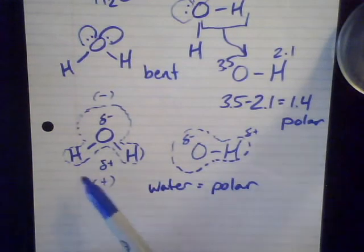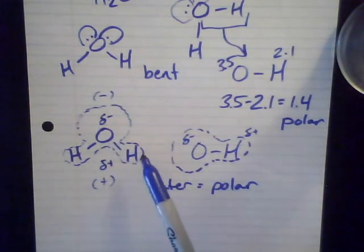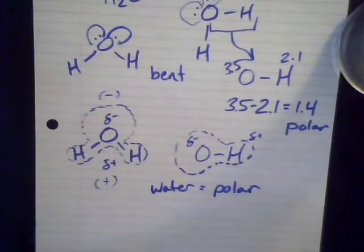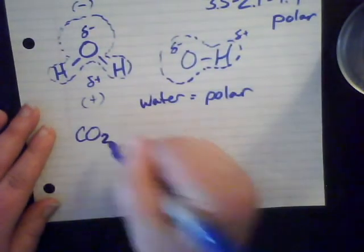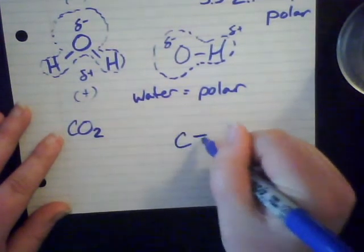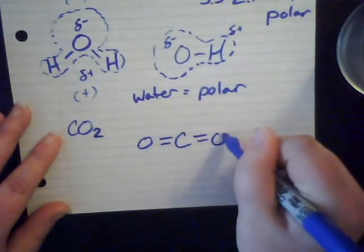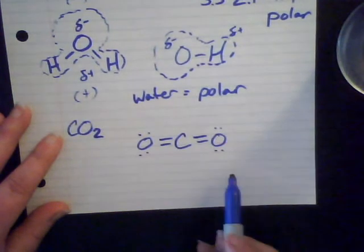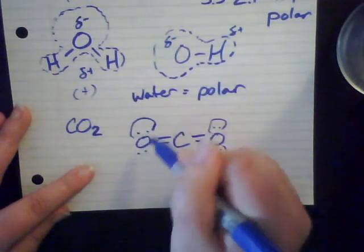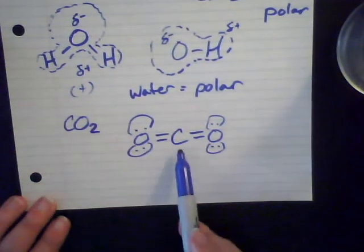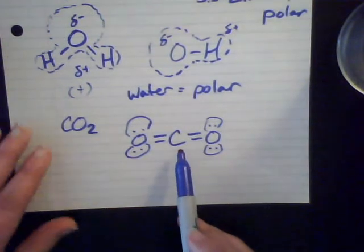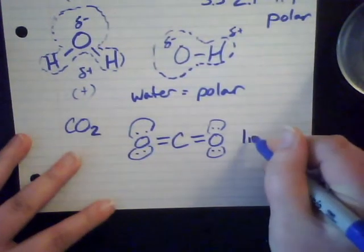There's a combination of the shape and the polar bonds that makes water polar — because the molecule is bent. Let's look at another example: carbon dioxide. Carbon dioxide has carbon at the center with double-bonded oxygens on each side, with lone pairs. Everyone has a full octet. Carbon has two electron groups around it as the central atom, and two electron groups give you linear geometry. So the shape of CO₂ is linear.